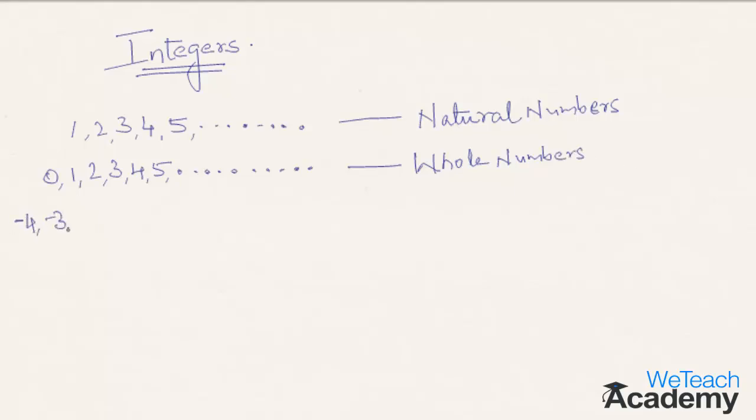Now let's say if you have some negative numbers like minus 1, minus 2, minus 3, minus 4 and so on, and if you merge them with the earlier collection that's the whole numbers, then the whole set of these numbers are called integers.